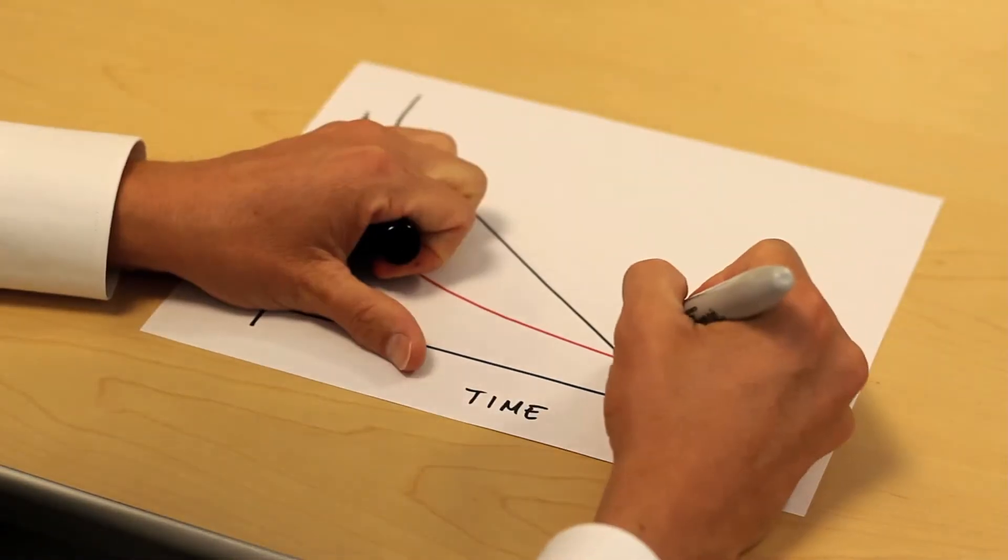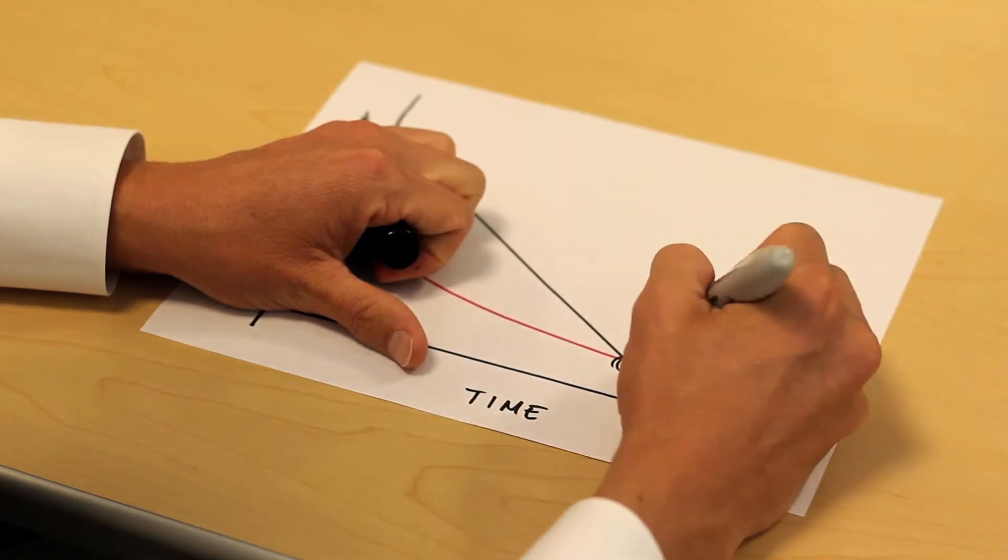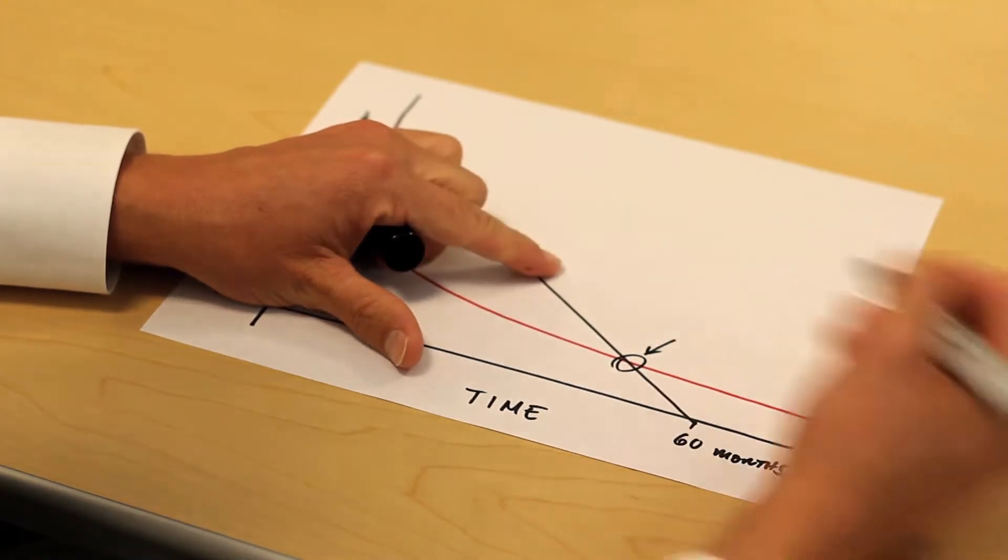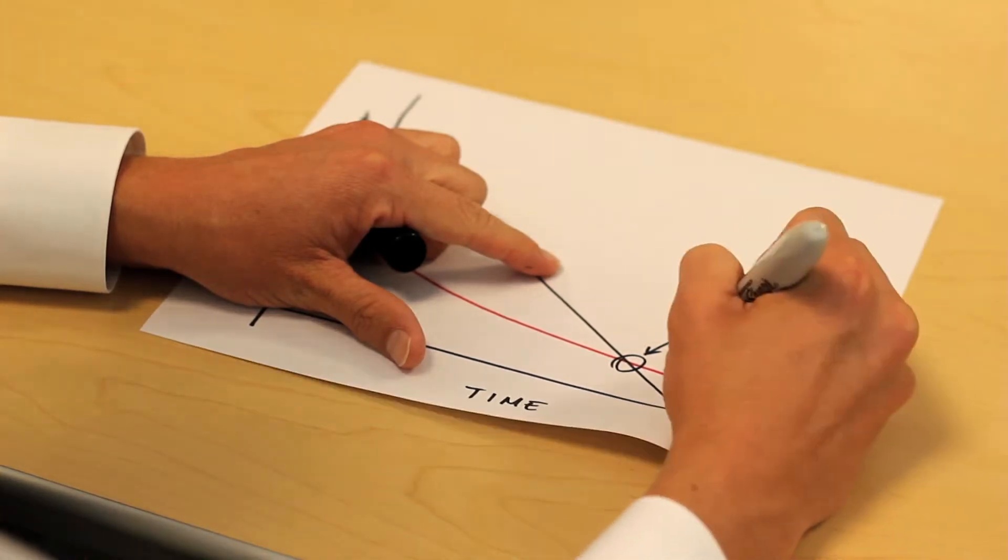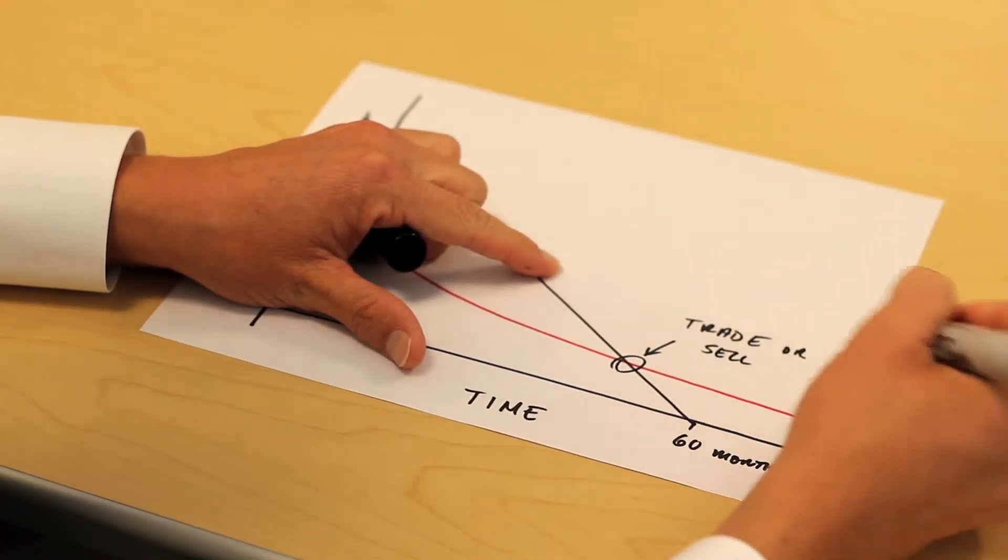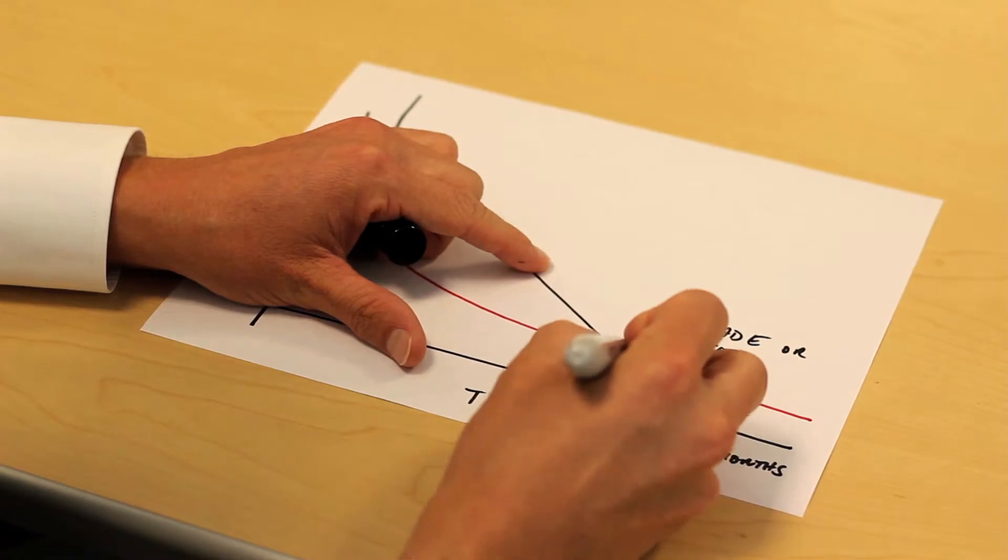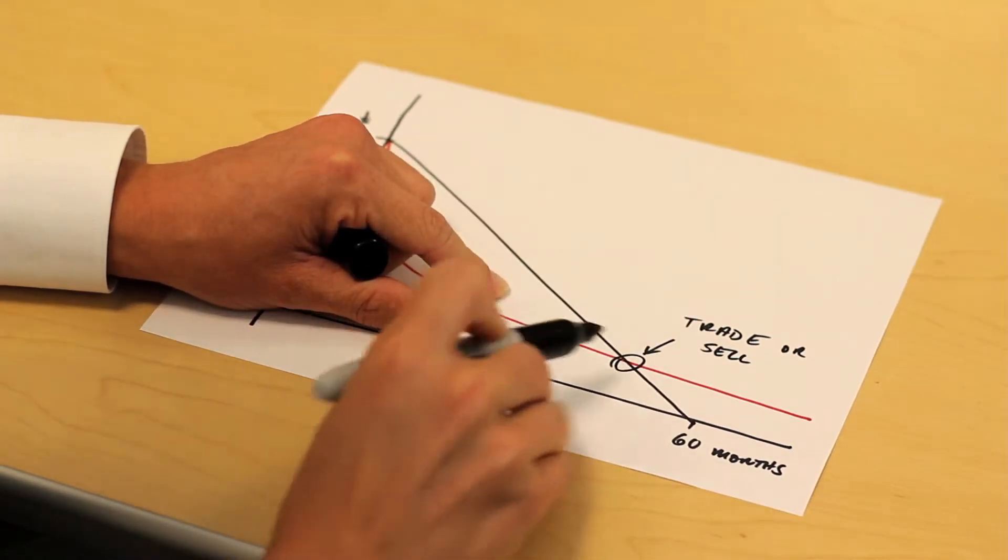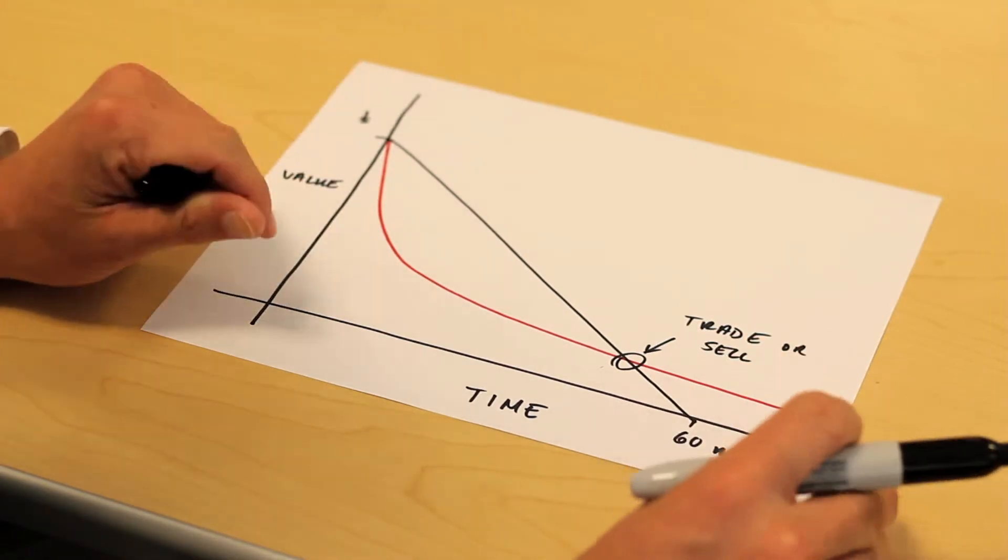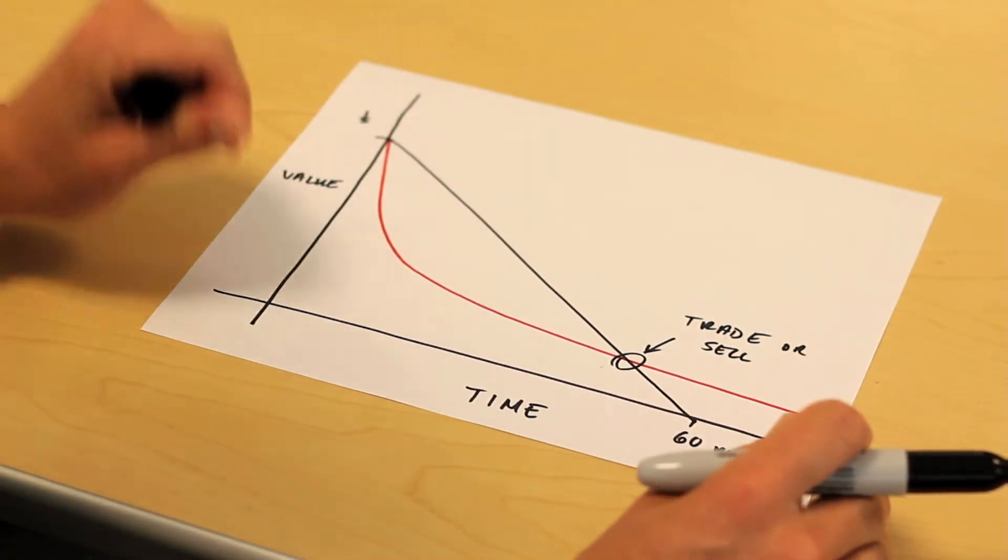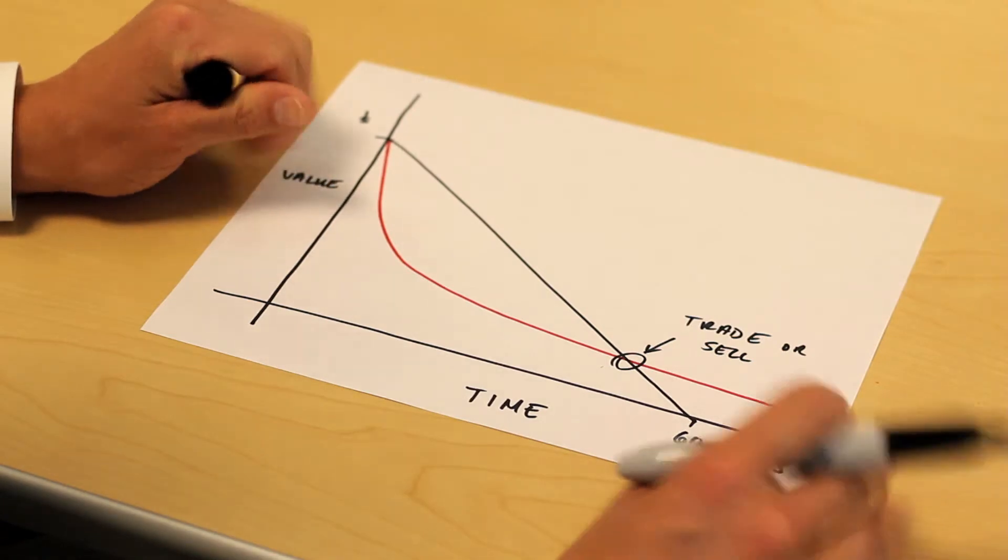So what you want to look at is where these numbers cross. Now this is the ideal time to trade or sell your car because what you owe on it is the same as what it's worth. So it's a wash, you could sell it for the same amount, write a check back to your bank and everyone's happy.